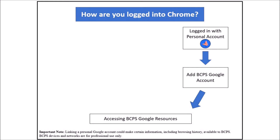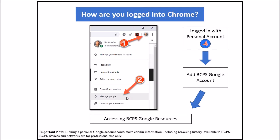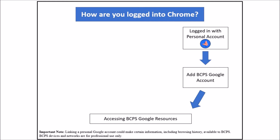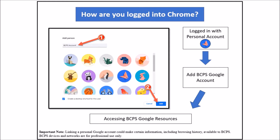To add your BCPS account, click on the avatar icon in the top right corner and select manage people. Then click the add a person icon in the bottom right-hand corner. Next, type a meaningful name for the account, such as BCPS account, and click the add button. Select an icon — it does not matter which icon you choose, as it will revert to the BCPS Google account icon once you are logged in.